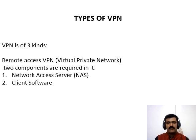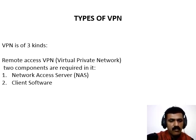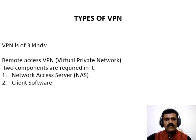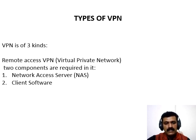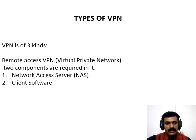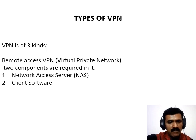Now let us move on to the types of VPN. VPN is of three kinds. The first one is remote access VPN. The VPN which allows individual users to establish secure connections with a remote computer network is known as remote access VPN. There is a requirement of two components in a remote access VPN: the first one is network access server (NAS) and the second one is client software. It enables the remote connectivity using any internet access technology.